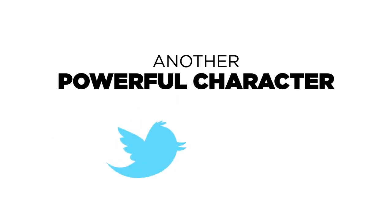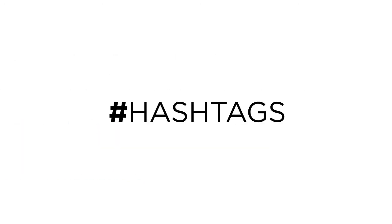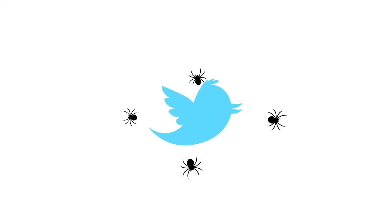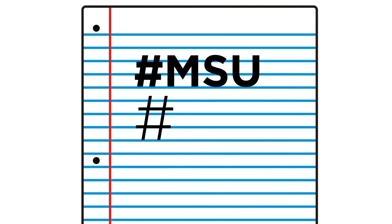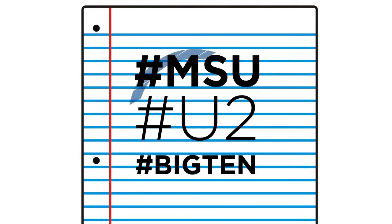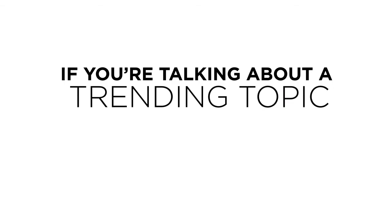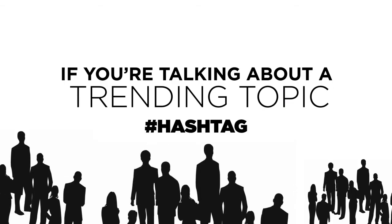Another powerful character in the Twitter lexicon is the pound sign. This symbol precedes what are called hashtags — words or word combinations that Twitter spiders look for to track trending topics. A pound sign in front of MSU, pound sign in front of U2, and Big Ten are examples. If you're talking about a trending topic, using a hashtag can get your message seen by a significantly greater audience.